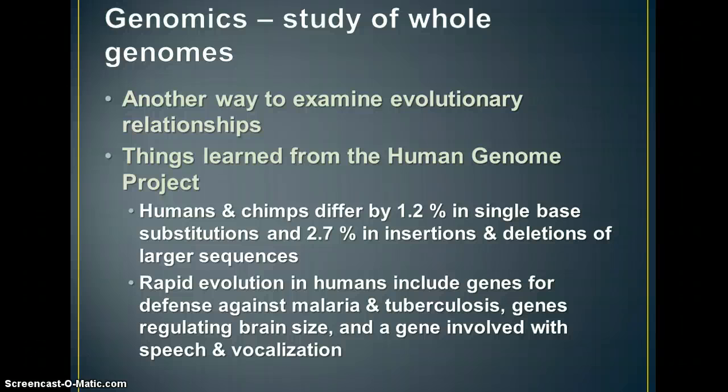And humans, when they began evolving, sometimes went through periods of rapid evolution. And some of those periods included the mutations that produced genes for defense against malaria and tuberculosis, genes for brain size, and a gene involved with speech and vocalization. One of the things that you need to realize about differences in DNA is that all differences originally originated from mutations. Some mutations are sometimes bad, but sometimes they're good because they lead to things like defense against malaria or being able to talk.